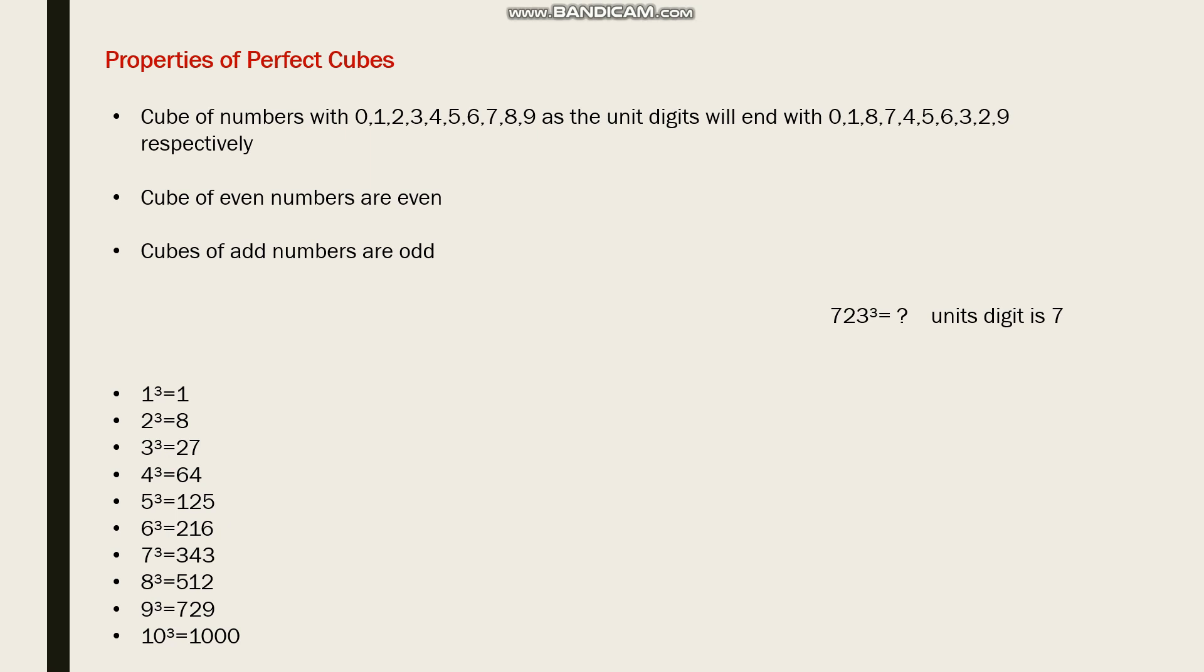Next: cubes of even numbers are even, and cubes of odd numbers are odd. If you consider 1³, one is odd, then you get 1, which is also odd. You can take 8 - 8 is even, then 512, which is also even.